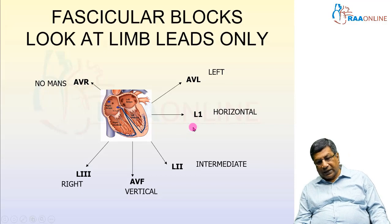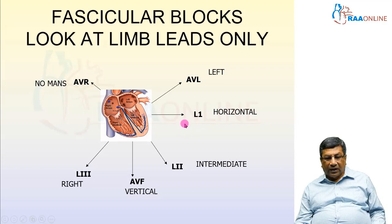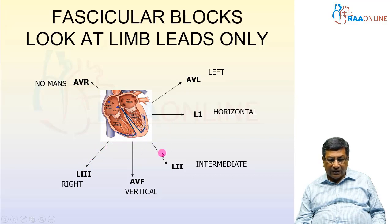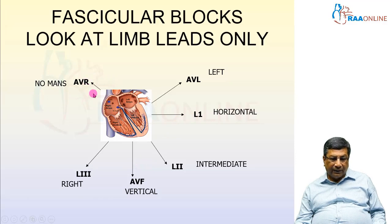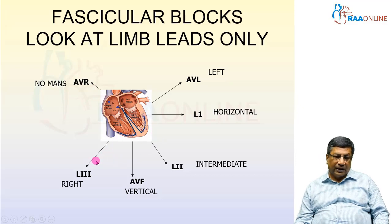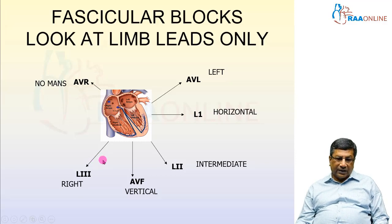Fascicular blocks are going to produce either left-axis deviation or right-axis deviation. You are not going to diagnose a fascicular block in the presence of a normal-axis or intermediate-axis deviation. We have to suspect fascicular blocks only when there is a left-axis deviation or right-axis deviation. Right-axis deviation is the tallest R-wave in L3 and deepest S-wave in AVL; left-axis deviation is the tallest R-wave in AVL and deepest S-wave in L3. The presence of normal or indeterminate axis almost excludes fascicular blocks.